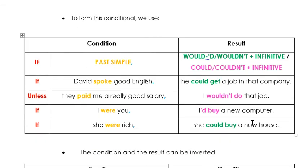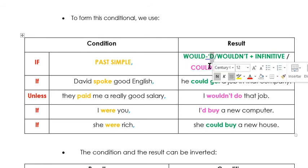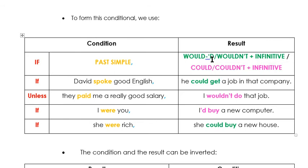To form this conditional, we use the past simple in the if clause. And in the result clause, we can use 'would' or 'd' — which is the contraction of would — la forma corta de would — or 'wouldn't', plus the infinitive, affirmative or negative, plus the infinitive. Or we can also use 'could' or 'couldn't' plus the verb in the infinitive.